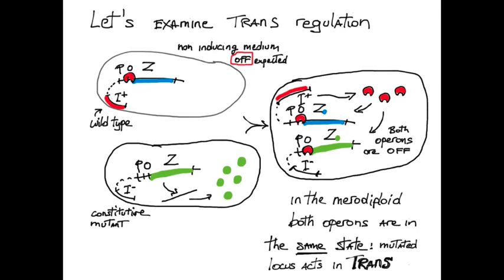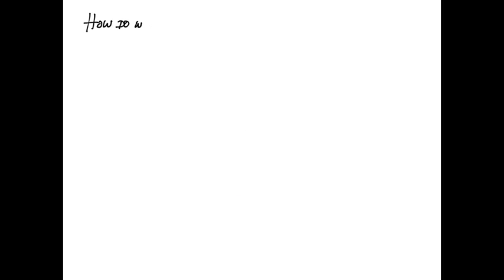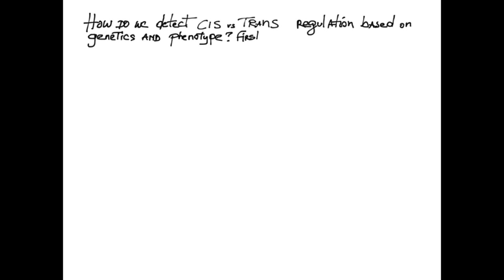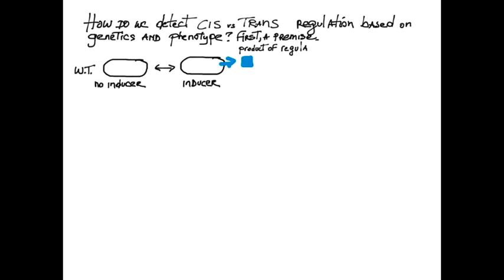Looking inside the cell makes things easy. What if we have to detect cis versus trans action by the phenotype of mutants? There is a problem. Let me explain.